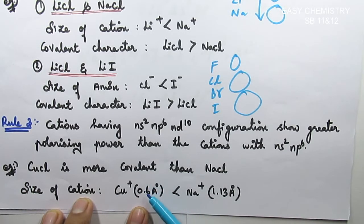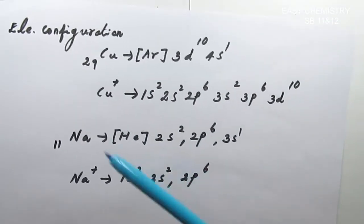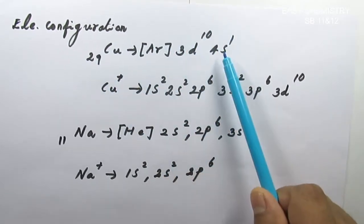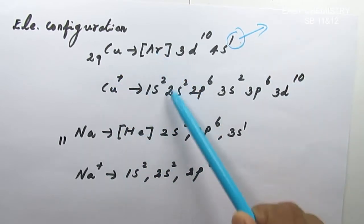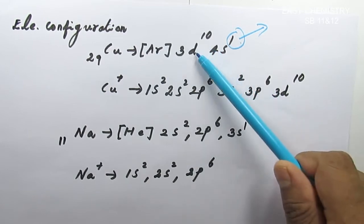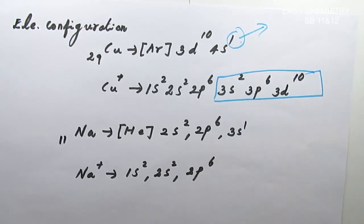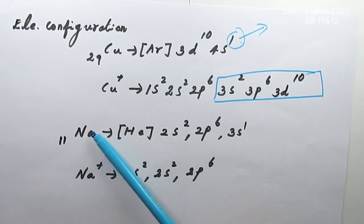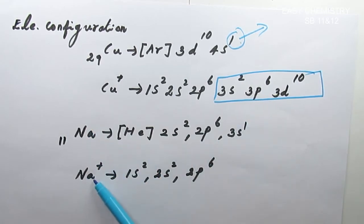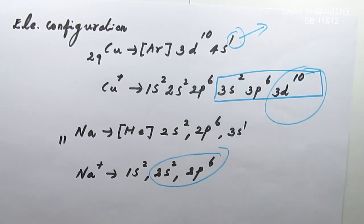Let's discuss the electronic configuration for Rule 3. Copper has atomic number 29. Cu⁺ has a complete 18-electron configuration: 3s², 3p⁶, and 3d¹⁰. This ns²np⁶nd¹⁰ configuration gives Cu⁺ greater polarizing power. In contrast, Na⁺ has the configuration 2s², 2p⁶ — only ns²np⁶. Therefore, CuCl has more covalent character than NaCl. That is Rule 3.